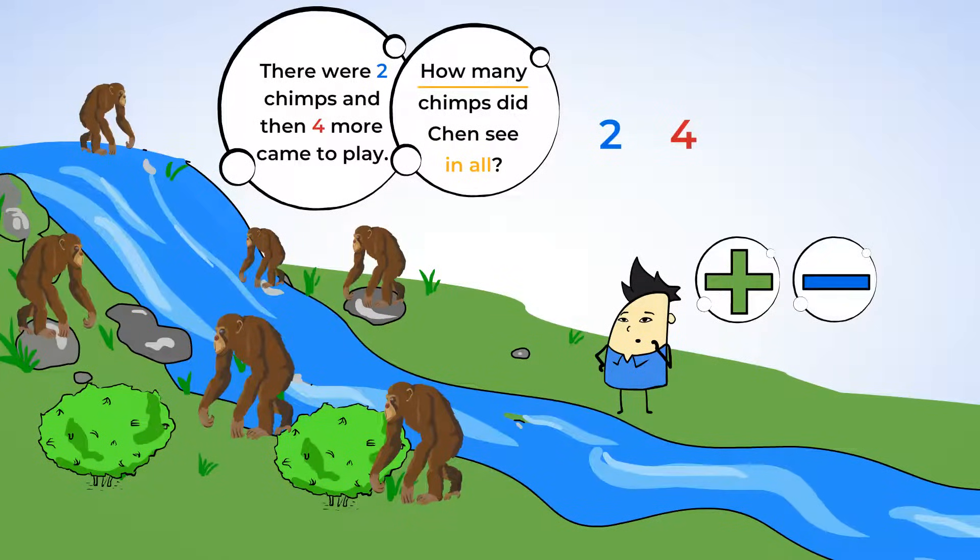Let's go back to the problem. I see the word more and the words in all. Those are the clues we need to add. And that makes sense because there were two chimps playing and then some more chimps joined. So, the number of chimps got bigger. Okay. So, we need a plus sign here. Now, let's add.